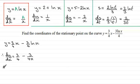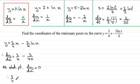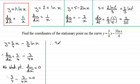At the stationary point, dy/dx — the gradient — equals 0. So three quarters minus 3 over 4x must equal 0. Multiplying throughout by 4x, we get 3x minus 3 equals 0. Rearranging: 3x equals 3, and therefore x equals 1.